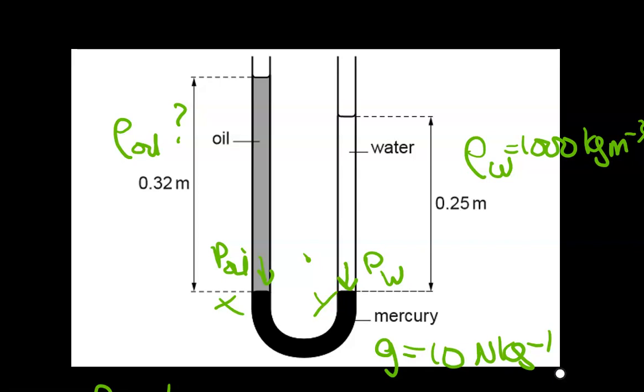This is a typical question here of a modification of the U-tube manometer, and it is one of the harder questions that you can get in an exam. You will find here that you have a U-tube and it is having three different liquids.